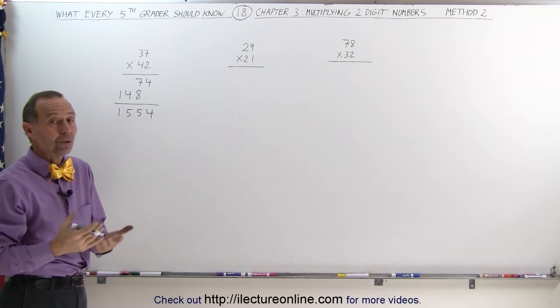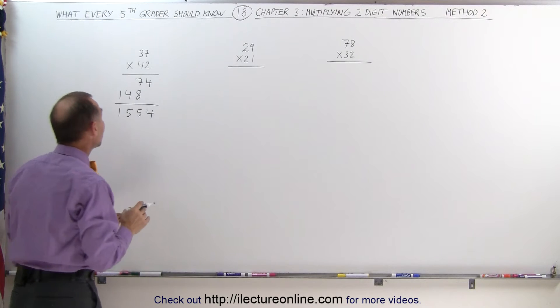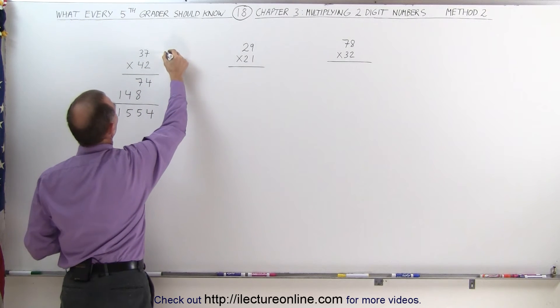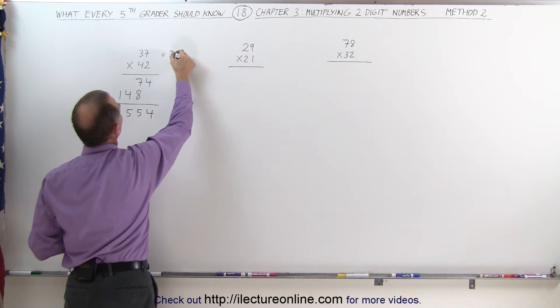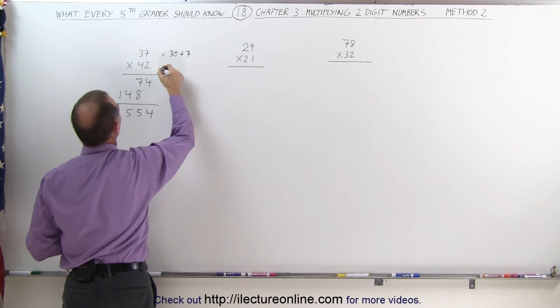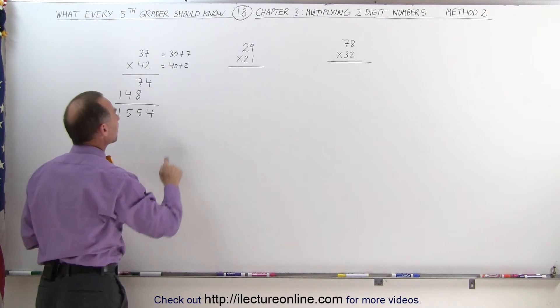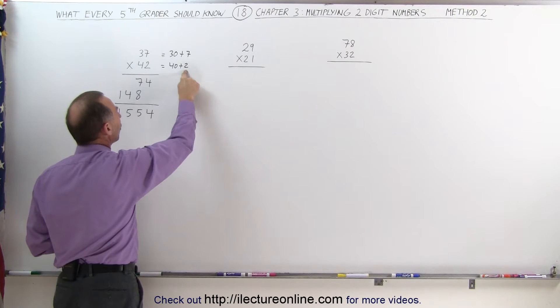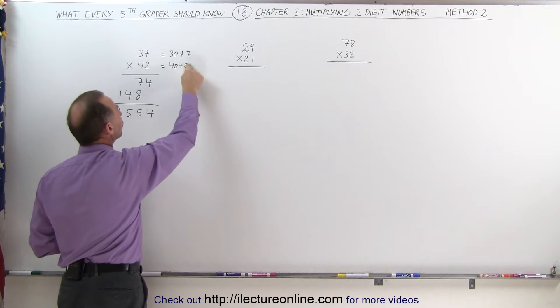Now what is that Method 2 I was talking about? What you can think about is that 37 times 42, since 37 is the same as 30 plus 7 and 42 is the same as 40 plus 2, you can get the same thing by multiplying 30 times 40, 30 times 2, 40 times 7, and 2 times 7.